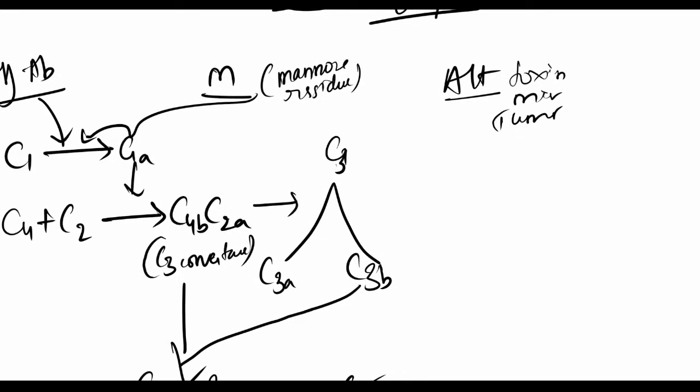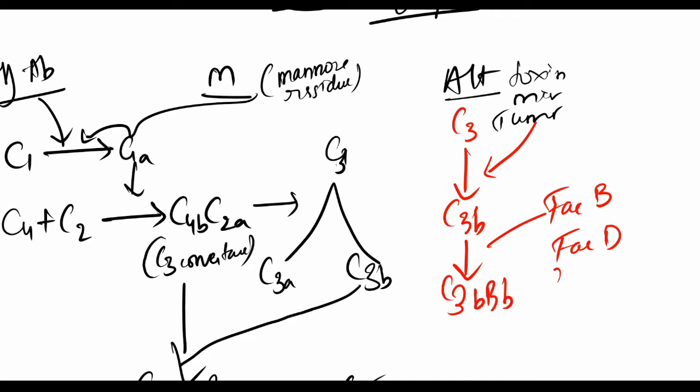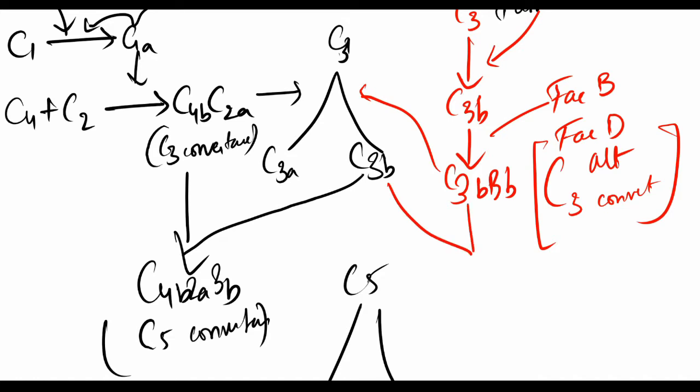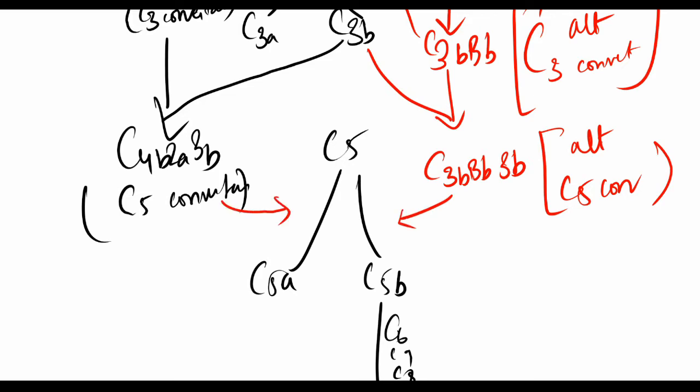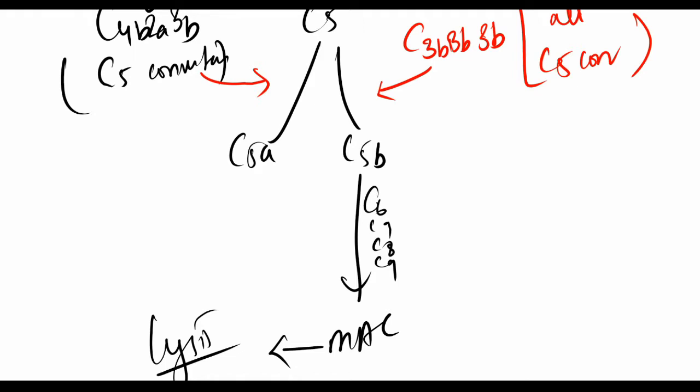In the alternate pathway, it starts with C3, which with stimulus becomes C3b. Factor B is added and in the presence of Factor D forms C3bBb, which is also C3 convertase. Since we're in the alternate pathway, we'll call it the alternate C3 convertase. C3b gets added to C3bBb, forming C3bBb3b - this is C5 convertase. Since we're in the alternate pathway, we'll call it the alternate C5 convertase - and it does the same thing, and then the end again. If the question was which is the most important complex in the complement system, the answer would be C3 because it is involved in all three pathways.